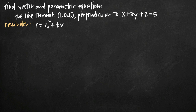Today we're going to be talking about how to find vector and parametric equations. In this particular problem, we've been asked to find vector and parametric equations for the line which passes through a given point and is perpendicular to the plane x plus 3y plus z equals 5.